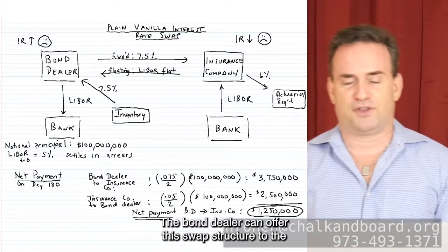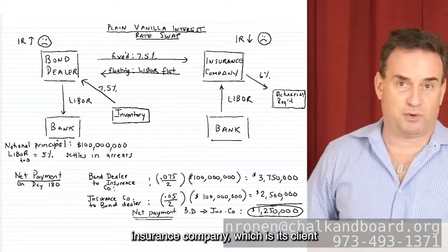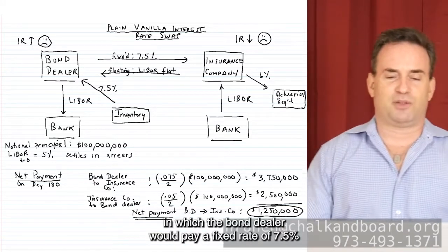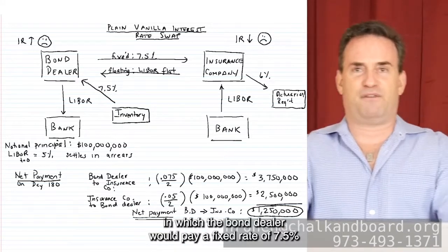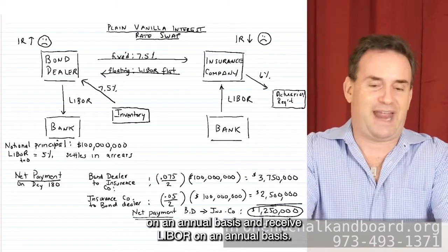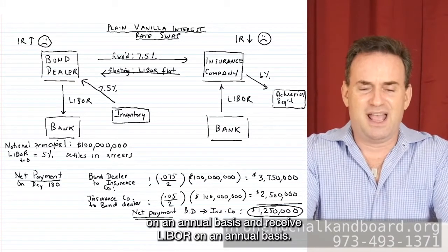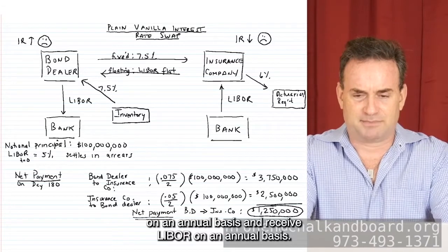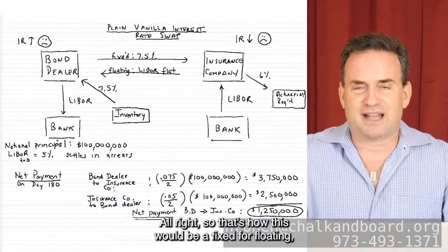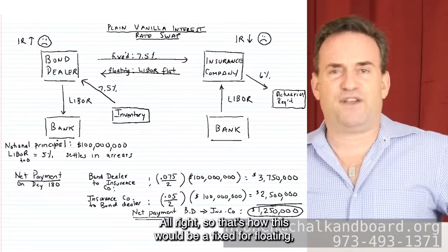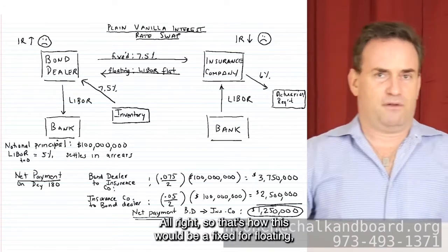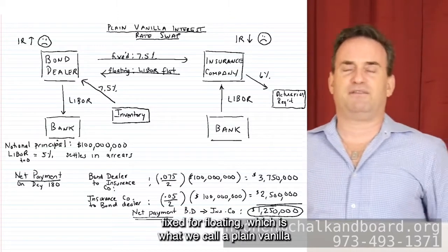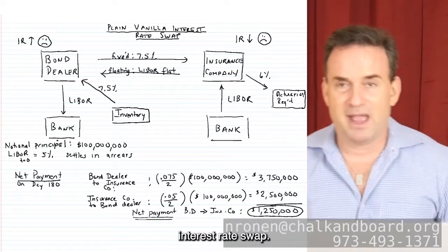The bond dealer can offer this swap structure to the insurance company — its client — in which the bond dealer pays a fixed rate of 7.5% annually and receives LIBOR annually. That's a fixed-for-floating structure, which is what we call a plain vanilla interest rate swap. All of this is based on a notional principal of $100 million.